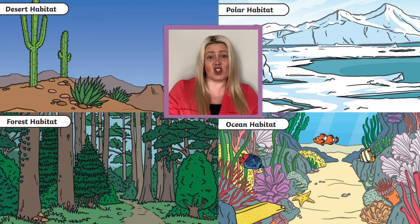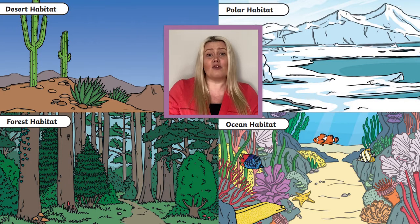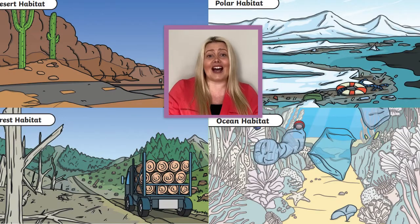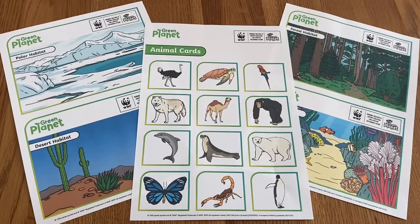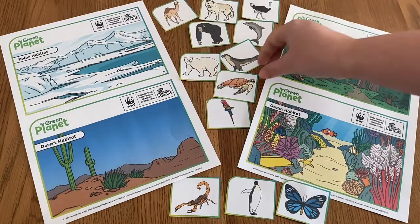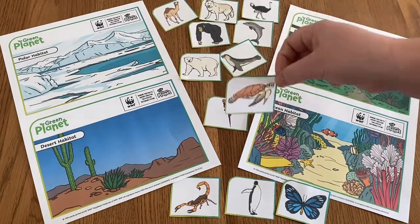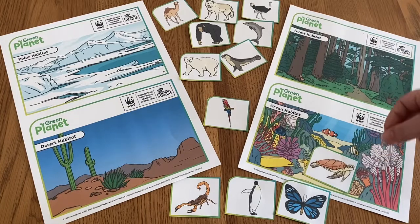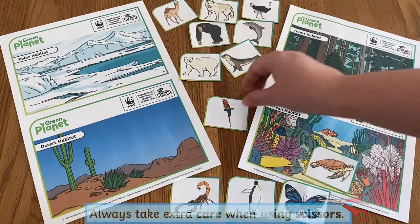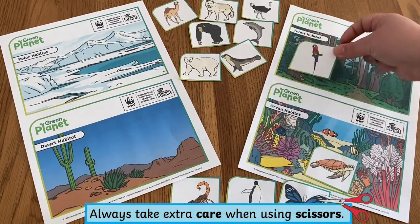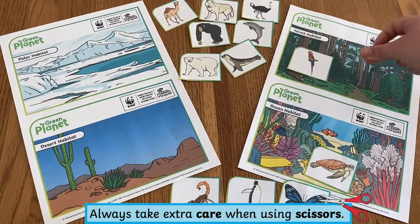In the matching activity, children need to look closely at the different types of habitats. For each type — desert, polar, forest, or ocean — both a damaged and an unspoilt habitat are shown. Children need to choose the habitat that will be best to give the animals pictured what they need. They then cut out the animal pictures and stick them onto the correct habitat.